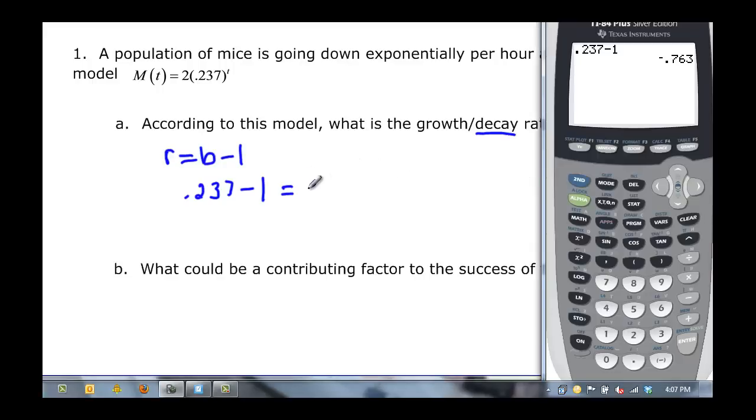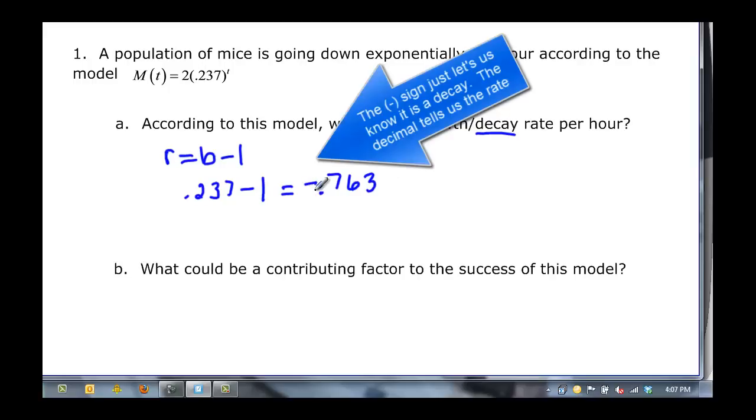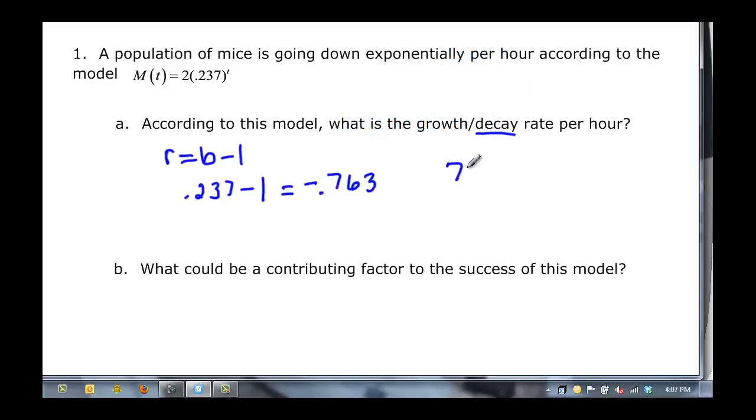Negative 0.763. Since it's negative, that means it's decay, so we don't really need the negative when we write the percentage. We just say that it's 76.3% decay per hour.